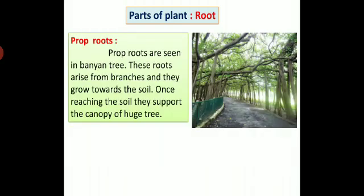Prop roots are seen in banyan tree. These roots arise from branches and they grow towards the soil. Once reaching the soil, they support the canopy of huge tree. You can see prop roots of a banyan tree in this diagram.